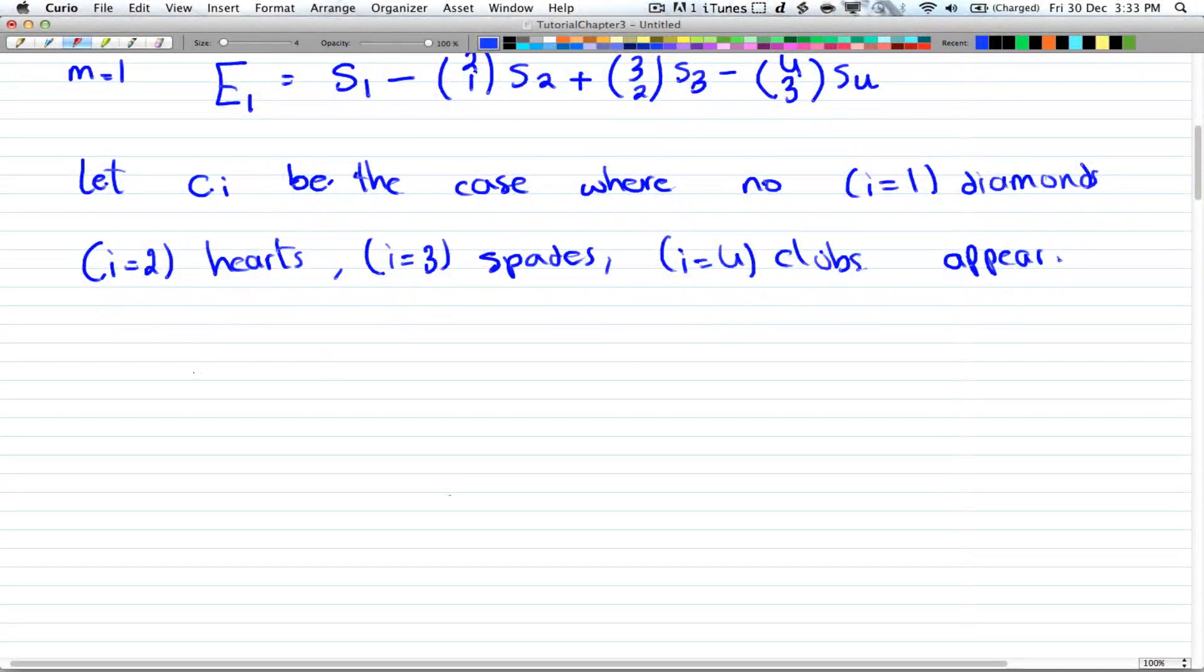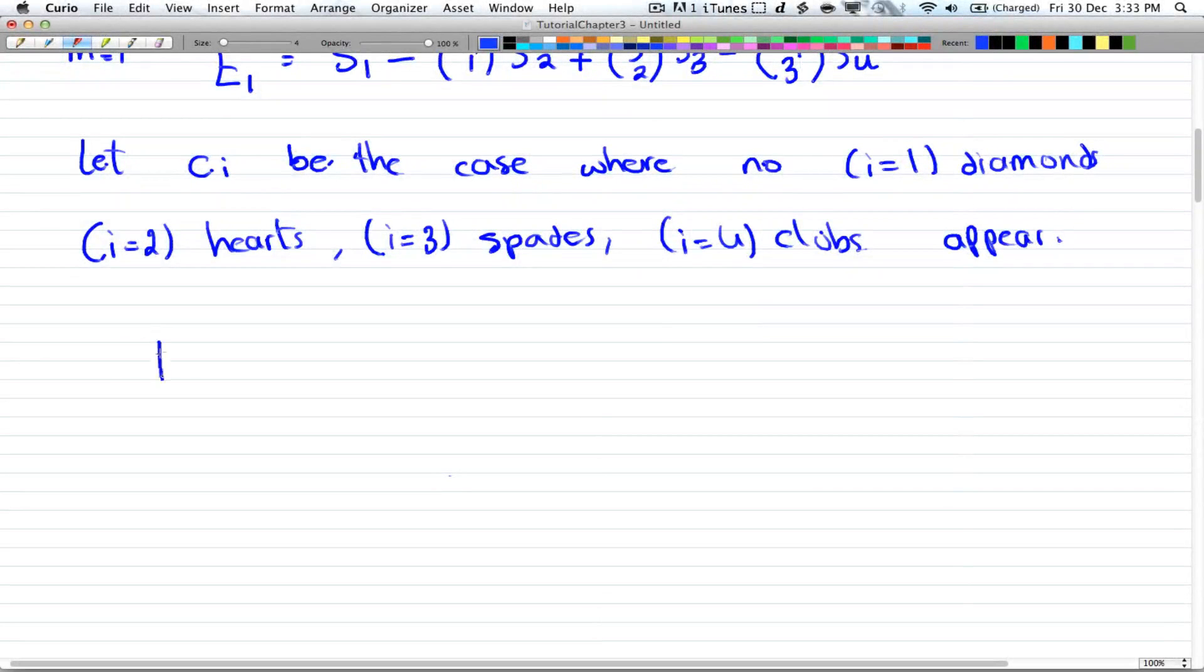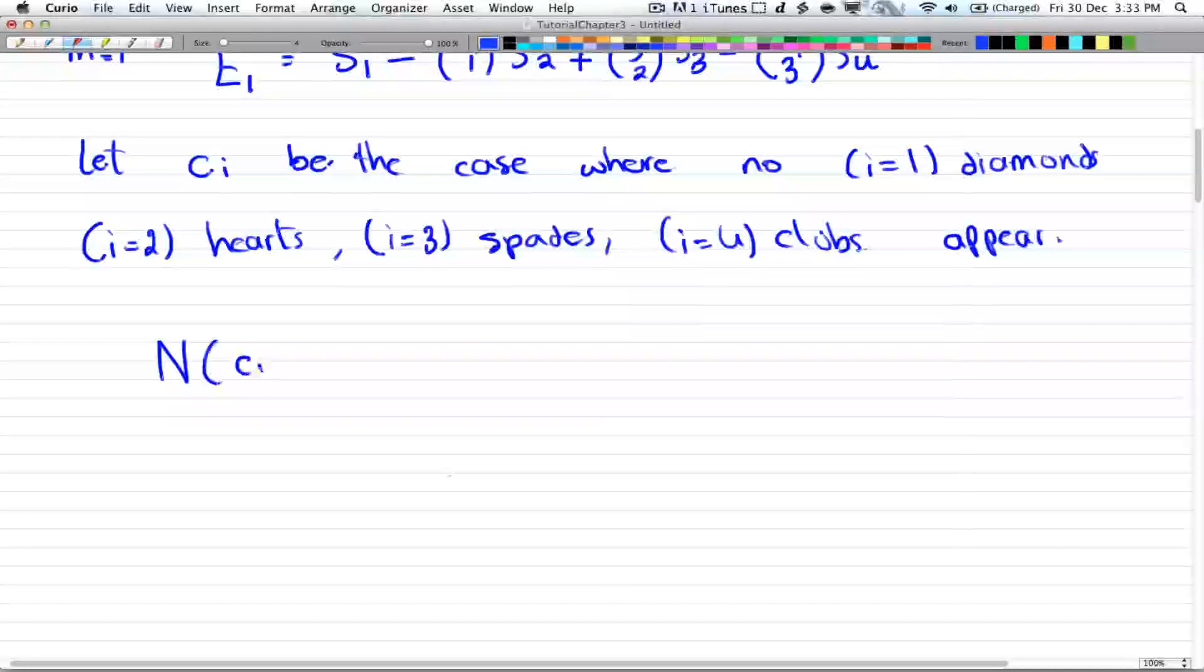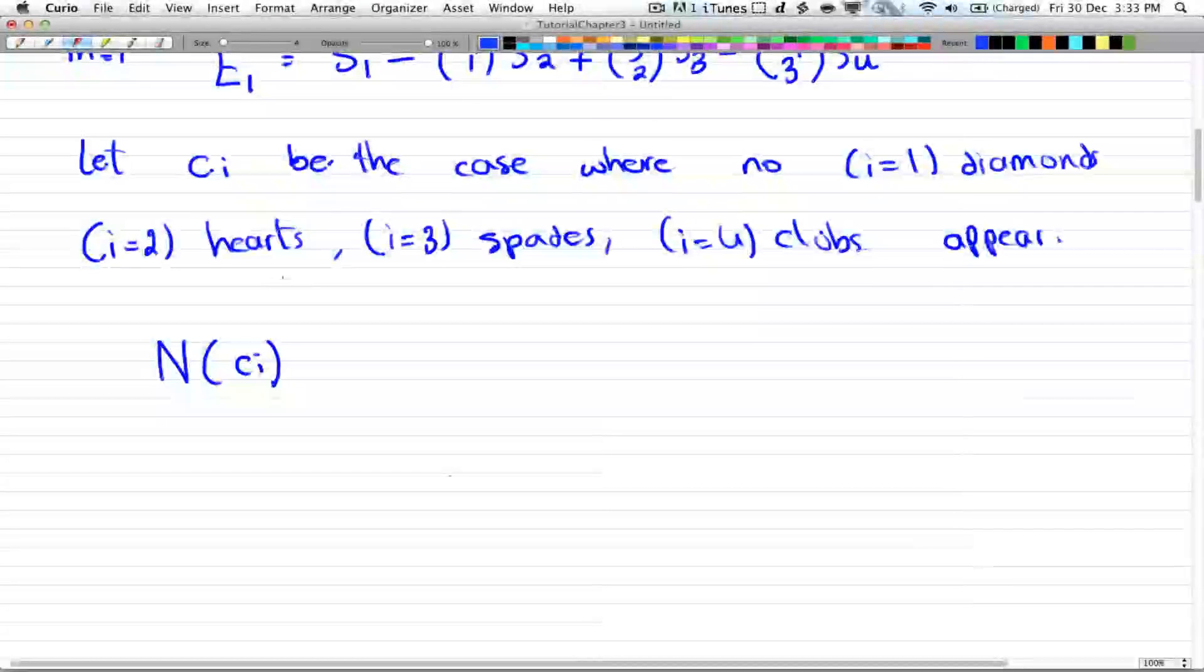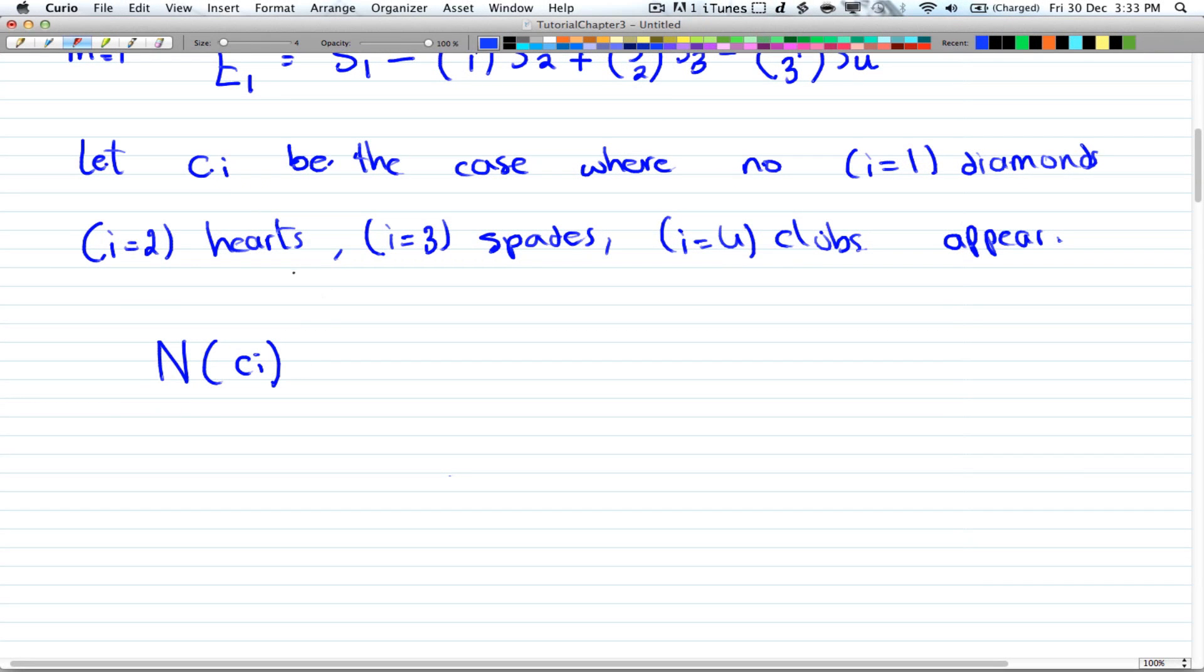Alright, so now we're going to find N of c_i. So N of c_i, that will be the case that only one suit doesn't appear. If you have 104 cards in total and you subtract 1 suit, that will give you 104 minus 26, and that will be equal to 78. So you have 78 cards to choose from.